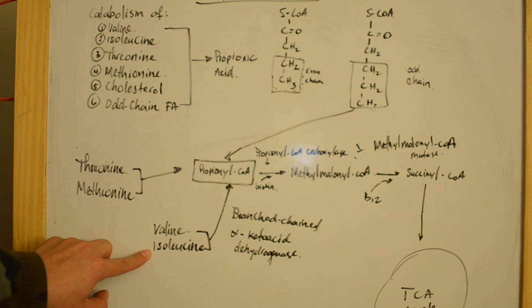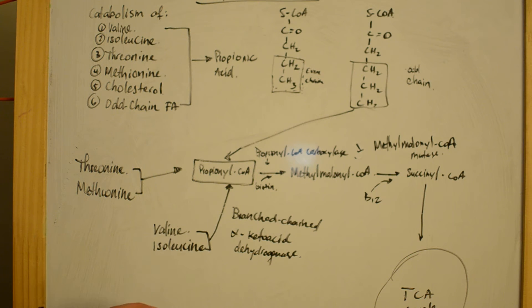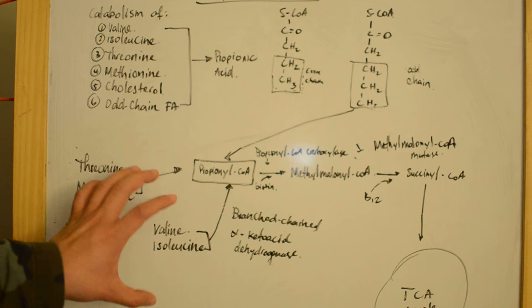Valine and isoleucine, with the use of the enzyme branched-chain alpha-keto acid dehydrogenase, are catabolized into propionyl-CoA.